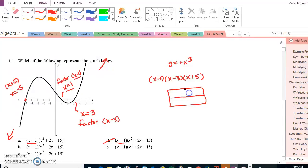I could do it with the box method. x minus 3, x plus 5, x squared minus 3x plus 5x minus 15, or x squared plus 2x minus 15. That's the quadratic factor.